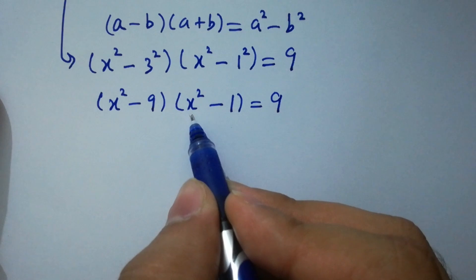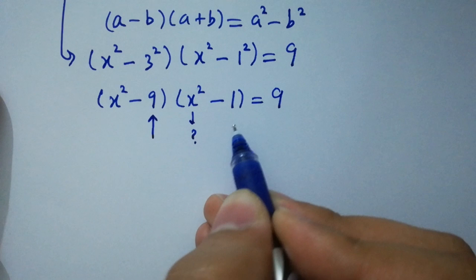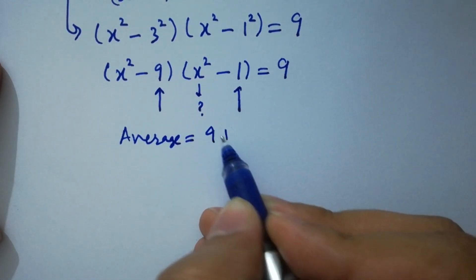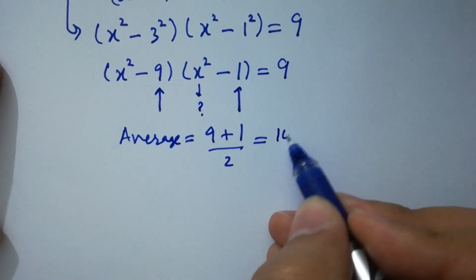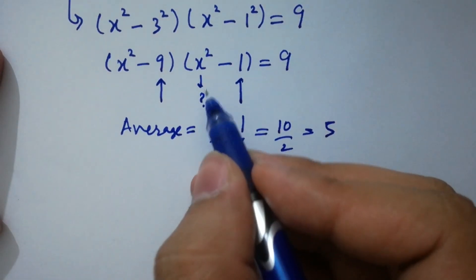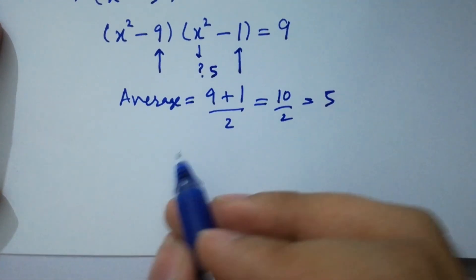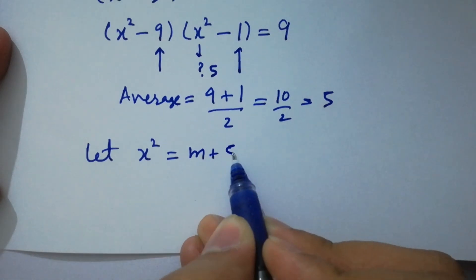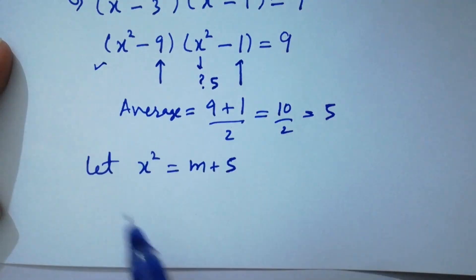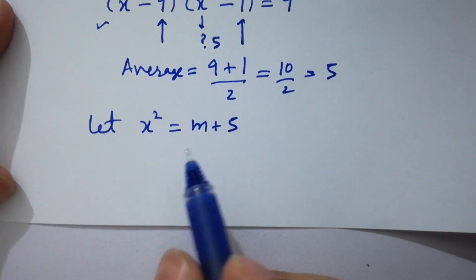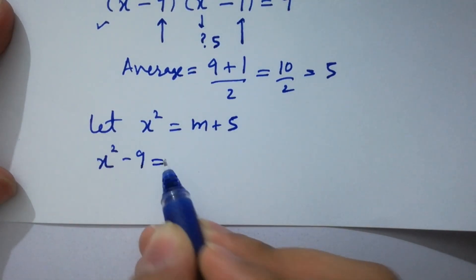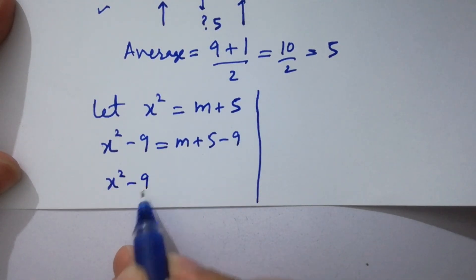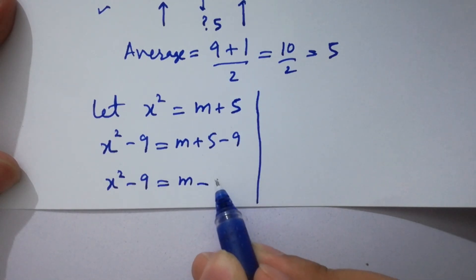Here to find x², we have 9 and 1, so we have to find the average, which is equal to (9+1)/2 = 10/2 = 5. So the value of x² is around 5. Let's substitute x² = m+5. Then for x²-9, subtract 9 on both sides: x²-9 = m+5-9 = m-4.